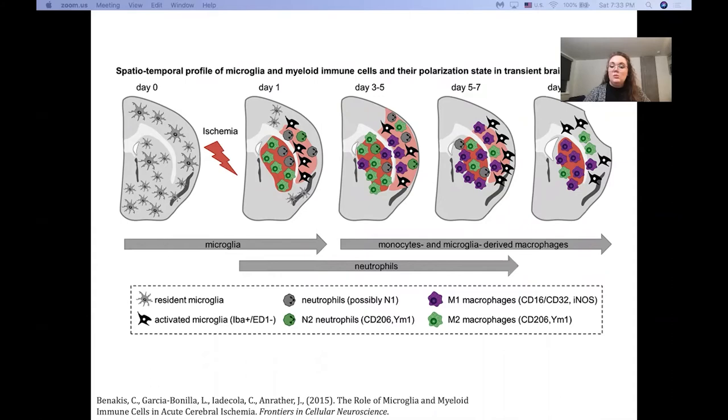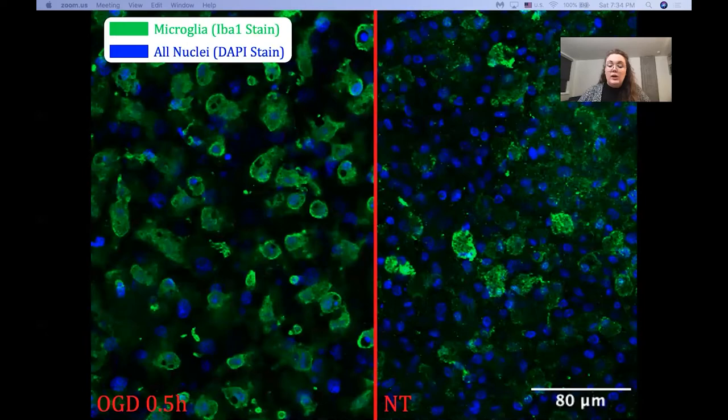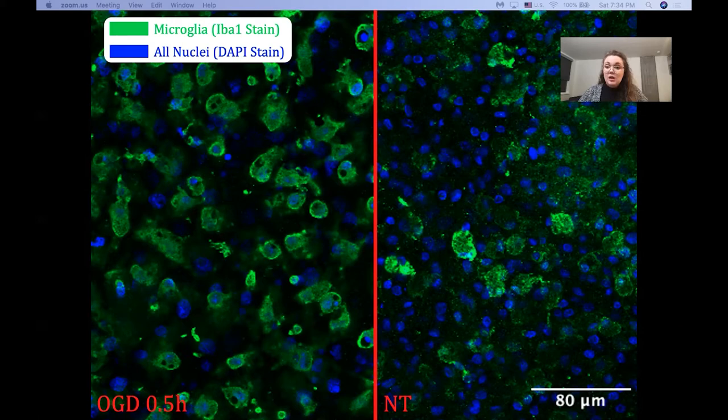So when we're studying cell shapes in our experiments, we actually get to study and quantify the difference in cell shape features amongst our groups, such as the injured group OGD at half an hour here and our non-treatment group. Just by the eye, it seems like the OGD cells are slightly more circular than the non-treated groups.